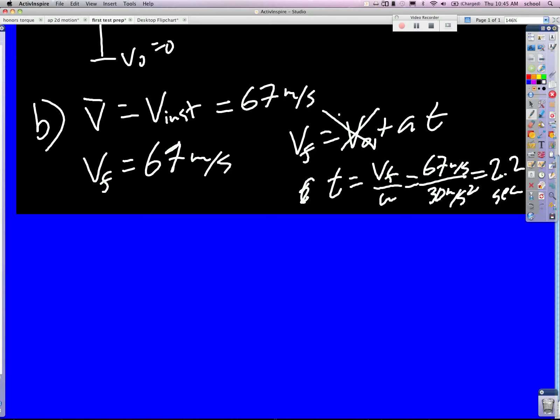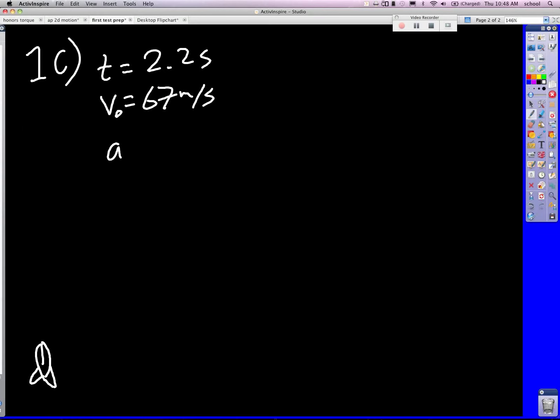So what we know about the bolt already is that once it's in the air, its acceleration is negative 10 meters per second squared. We need to know the height that the bolt leaves at. We know that the final velocity for this height is 67 meters per second. We know the initial velocity is zero. And we know the acceleration for that part was what?